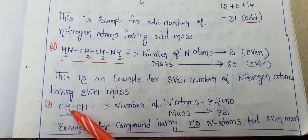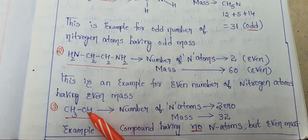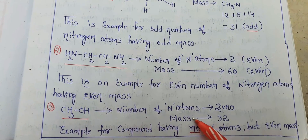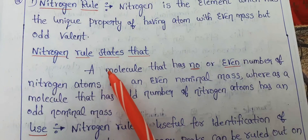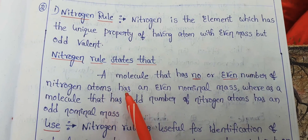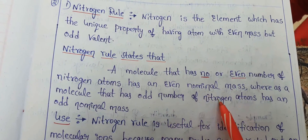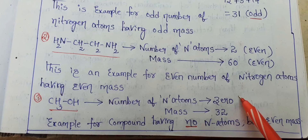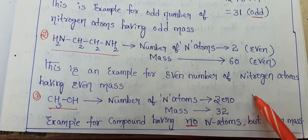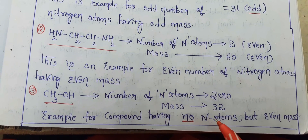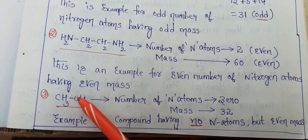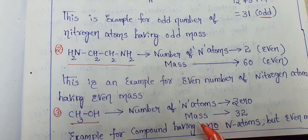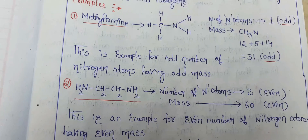Let us take a third example. This is methanol. In this molecule, nitrogen atoms are absent. The number of nitrogen atoms is 0. As we discussed, a molecule with no nitrogen atoms will also give an even mass. The mass here is 32, which is even. This is an example of a compound having no nitrogen atoms but even mass. I hope you understood. Thank you.